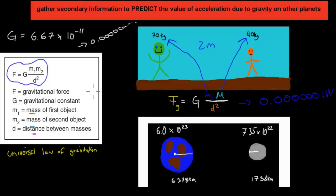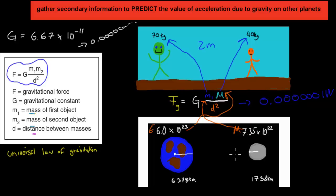But let's say instead we have an actual planet. So mass number one could be the Earth's mass, and a small m could be the mass of the Moon. That's 6.0 times 10 to the power of 24 for the mass of the Earth, and 7.35 times 10 to the power of 22 for the mass of the Moon. These are pretty big values. We still have to put in the distance as well — the distance between the Earth and the Moon is roughly 400,000 kilometers.